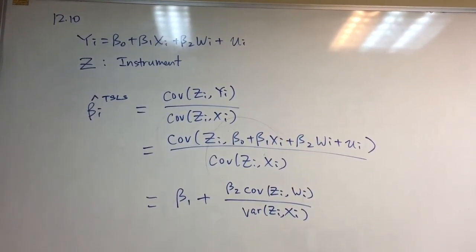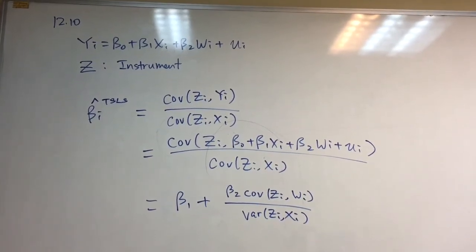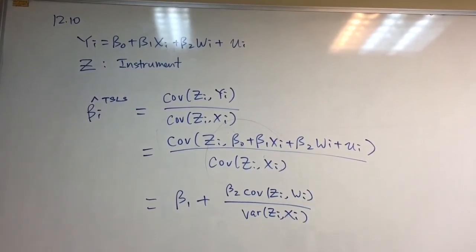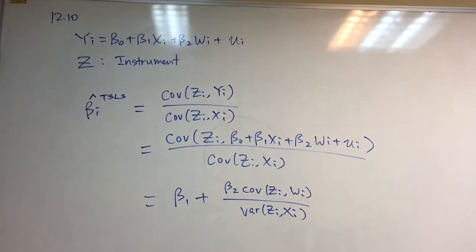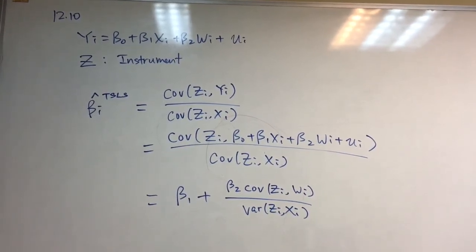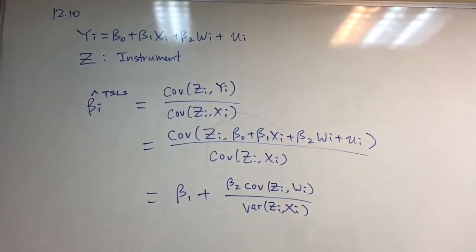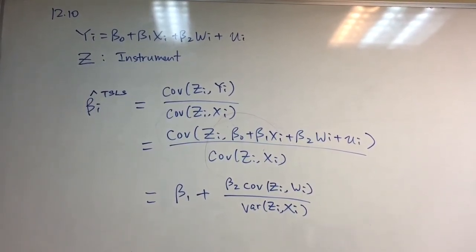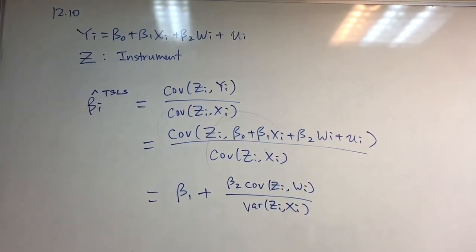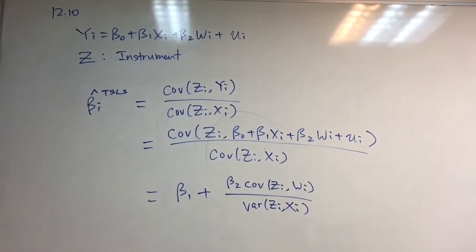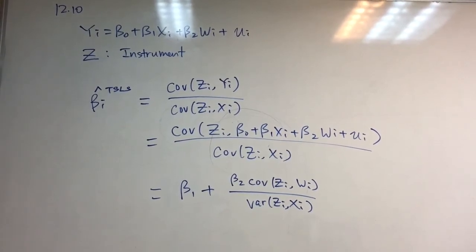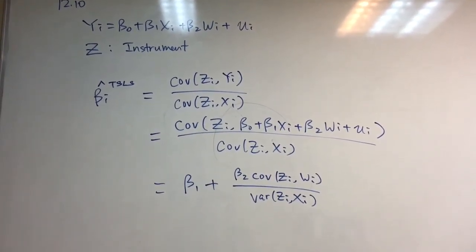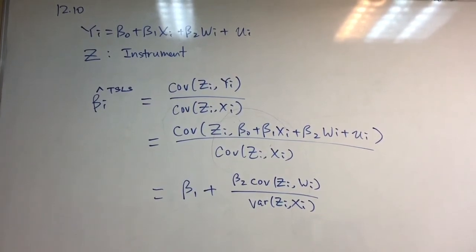You break yi into beta_0 plus beta_1 times xi plus beta_2 times wi plus ui. You can rewrite this as beta_1 plus beta_2 times the covariance of zi and wi, divided by the covariance of zi and xi. Note there is a typo in the denominator.